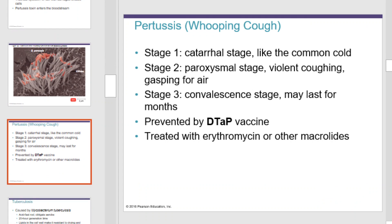In stage 1 of whooping cough, the catarrhal stage, symptoms are most like the common cold. In stage 2, the paroxysmal stage, patients exhibit violent coughing and gasping for air. In stage 3, the convalescent stage, which may last for months. Whooping cough can be prevented by the DTaP vaccine and treated with erythromycin.